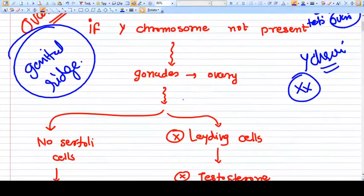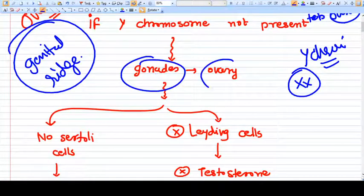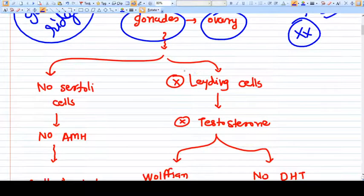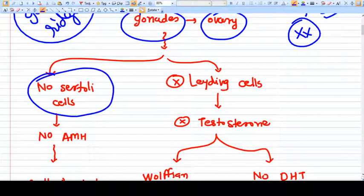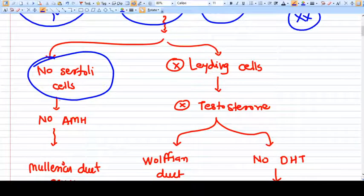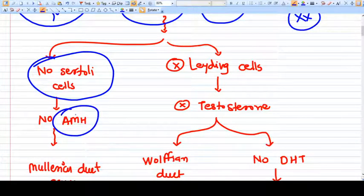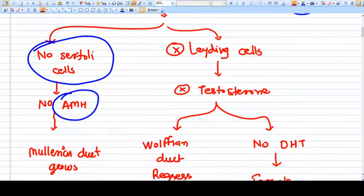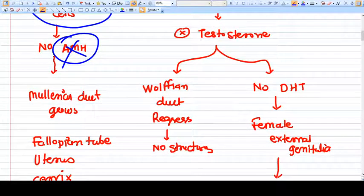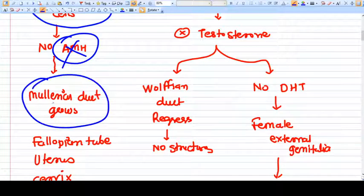So the gonad is now an ovary, and the ovary does not have sertoli cells. Sertoli cells secrete AMH, anti-mullerian hormone. In this case we don't have AMH, so mullerian duct will not be inhibited and that's why it will be developed.